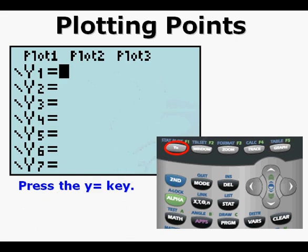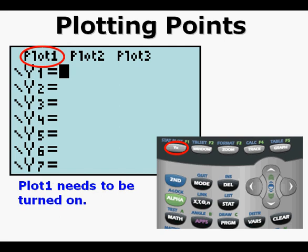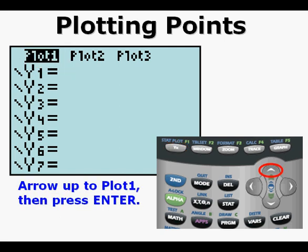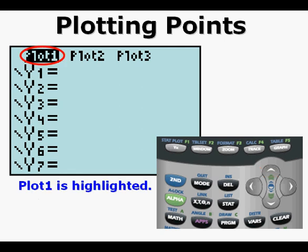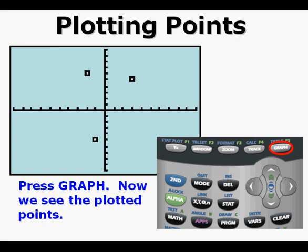Press the Y equals key to get to the function editor. Plot 1 is not highlighted — Plot 1 needs to be turned on. Arrow up to Plot 1, then press ENTER. Now we see that Plot 1 is highlighted. Press GRAPH. Now we see the plotted points.